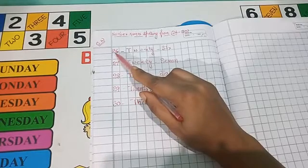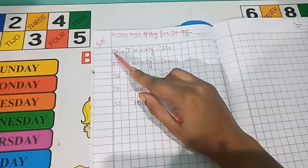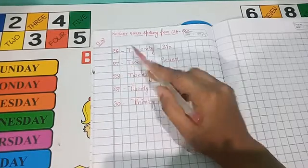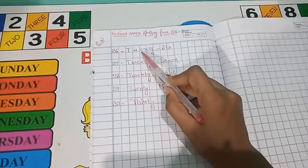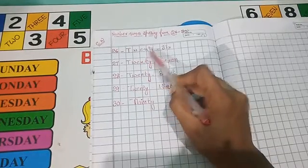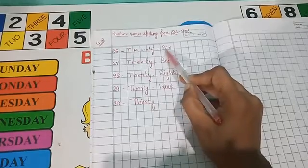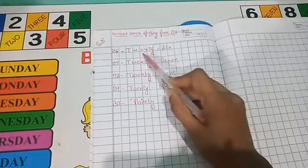This is number 26. The spelling of number 26 is T-W-E-N-T-Y, 26, S-I-X, 6, 26. Next.